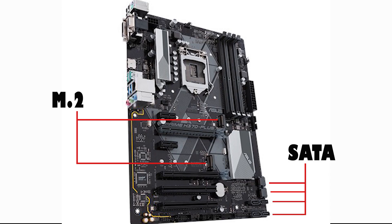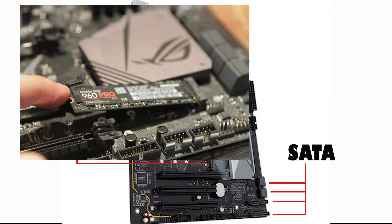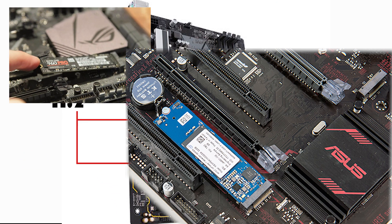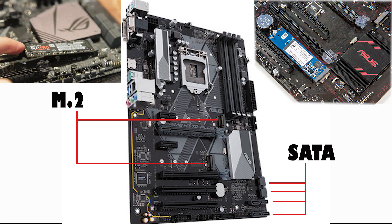There is also the SATA and M.2 port. SATA is the standard hardware interface for connecting hard drives, solid state drives, and optical drives to the computer; communication between the SATA port and devices is provided via SATA cables. M.2 can attach solid state drives directly to the motherboard, which allows faster speeds than using SATA cables.